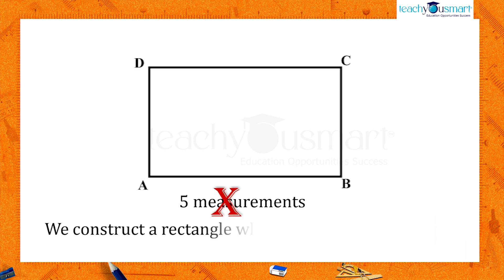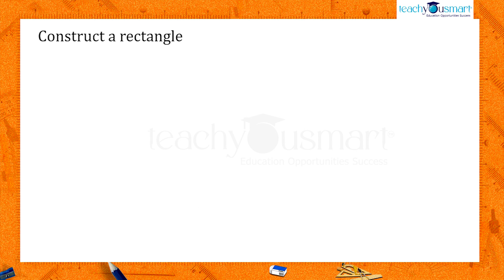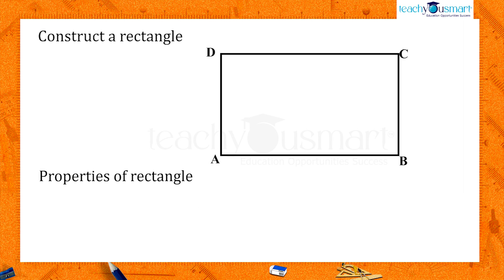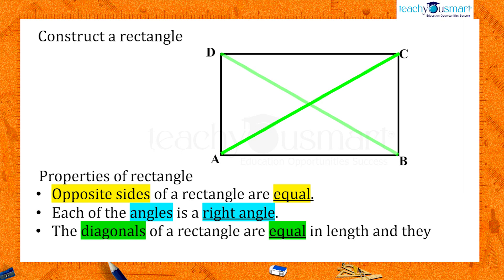Here, we construct a rectangle when the length of two adjacent sides are given. In order to construct a rectangle, we need to remember some properties of the rectangle. We know that the opposite sides of a rectangle are equal. Each of the angles is a right angle. The diagonals of a rectangle are equal in length and they bisect each other.